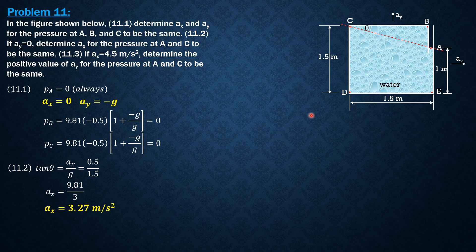And finally, for 11.3, if AX is 4.5 meters per second squared, determine the positive value of AY for the pressure at A and C to be the same.